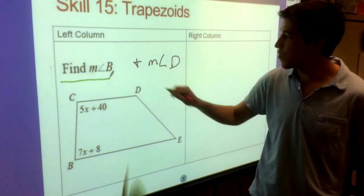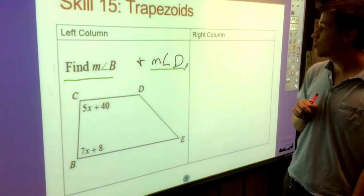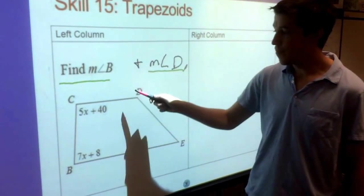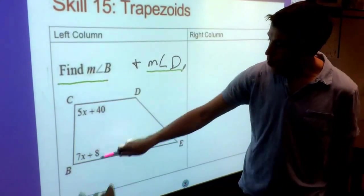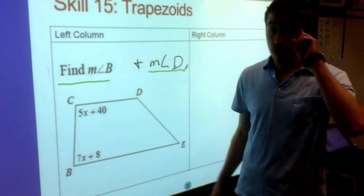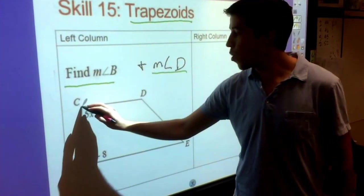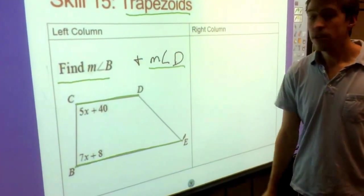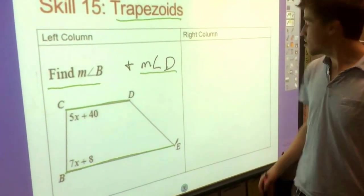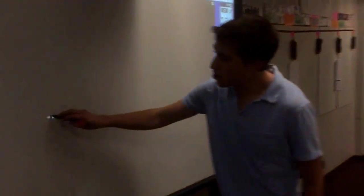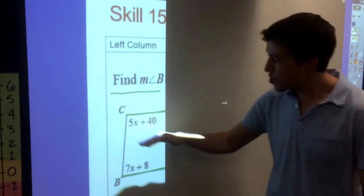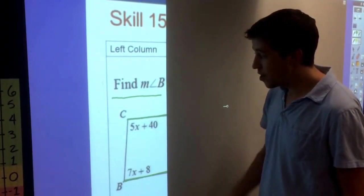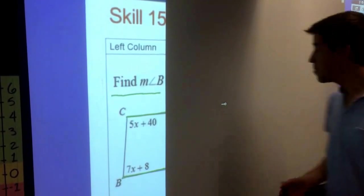So this equation is asking for the measure of angle B and the measure of angle D. So let's first start by what you're given. I gave you angle C and angle B, and if we remember, a trapezoid only has one set of parallel lines. C, D, and B, E are parallel. So the thing that we just discussed is that two angles that are on the same side of the trapezoid and they're on different bases are going to be supplementary. So those two angles will add up to equal 180.